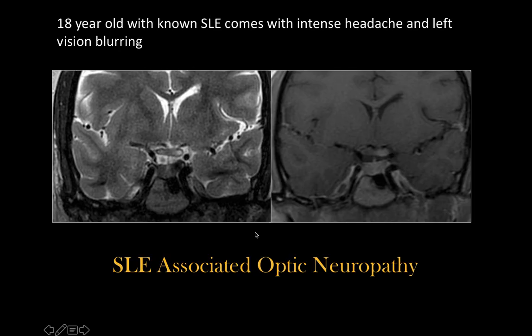This is an 18-year-old boy with known SLE who presented with intense headache and blurring of the left vision. We see abnormal signal involving the optic chiasm on both sides, with the left side swollen and showing enhancement. This is SLE-associated optic neuropathy.